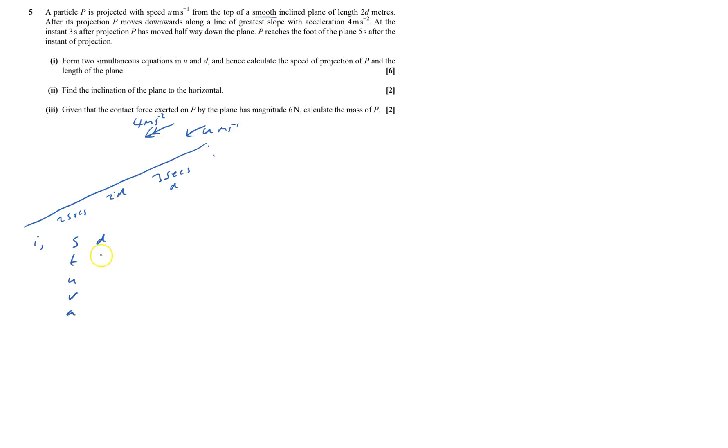Distance d, time was 3 seconds, u is u, v don't know about, and acceleration is 4. So that's the formula without v, so that will be s equals ut plus a half a t squared.